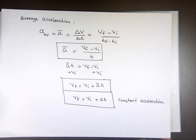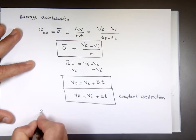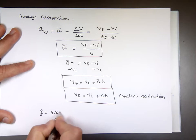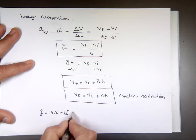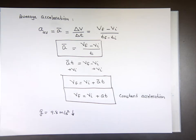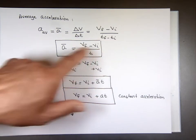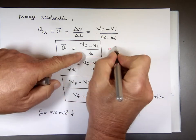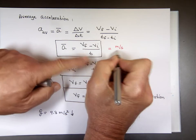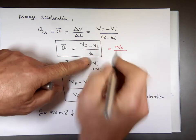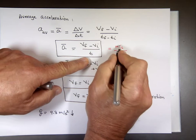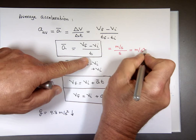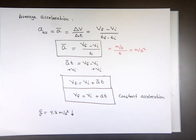Now, we know gravity on Earth — that's an acceleration — which is 9.8 meters per second squared, and it's directed downward. If you look at the units for acceleration: velocity is meters per second, and time is seconds. So meters per second divided by seconds gives you meters per second squared. That's the unit for acceleration.